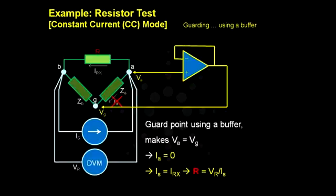Therefore, no current I-A. And with I-A equals zero, the correct resistance R can be measured with Vr over I-S.